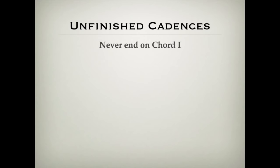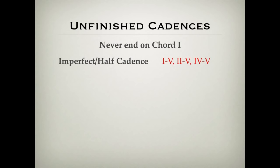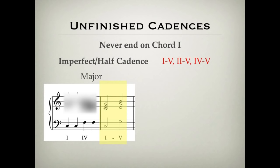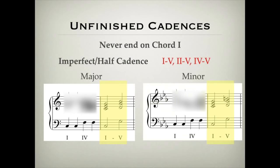So what about the unfinished cadences? These never end on chord I, because if they did they would sound finished. We've got two types of unfinished cadence. The first is the imperfect cadence, sometimes known as the half cadence. This ends on chord V, but it can be approached from chord I to V, chord II to V, or chord IV to V. Listen to how this sounds unfinished — you can clearly hear that the phrase wants to continue. The music wants to move on to something else.